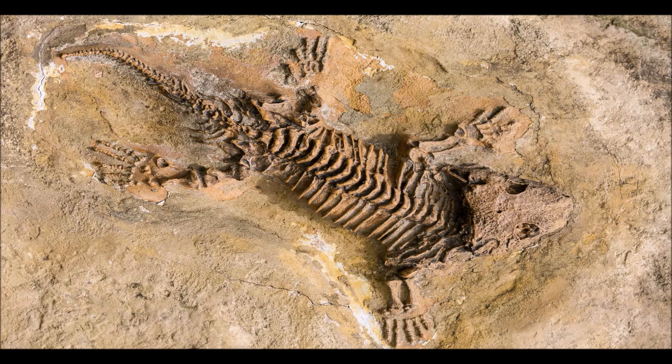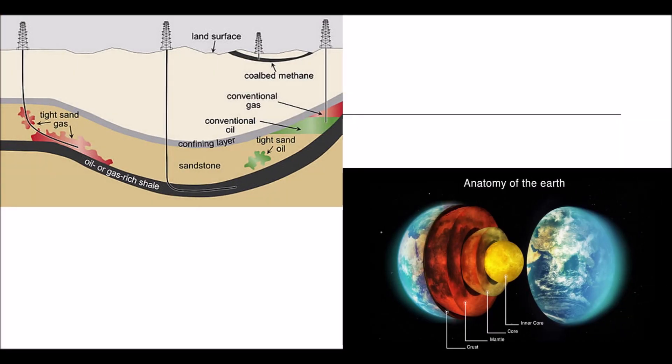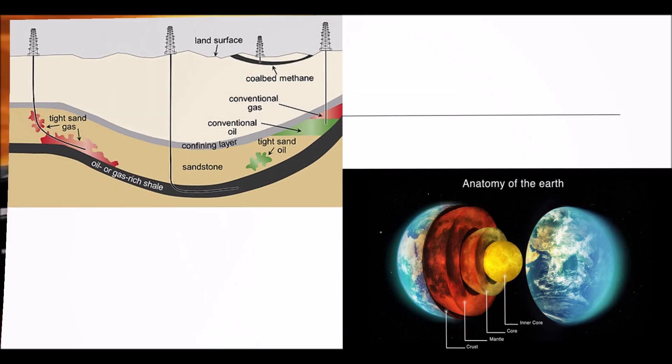According to the abiotic theory, proposed by Russian scientists in the 20th century, oil flows like lava in the earth's core, passes through the mantle, and deposits in puddles underneath the earth's crust. Crude oil can be found in all continents and oceans.